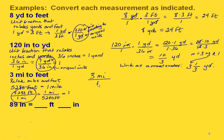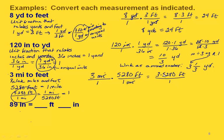We start with 3 miles over 1 and multiply by our unit fraction 5,280 feet over 1 mile. If we've done this correctly, our units will cancel out. On top we have 3 times 5,280, and on the bottom just a 1. Multiplying 3 times 5,280 gives us 15,840 feet.